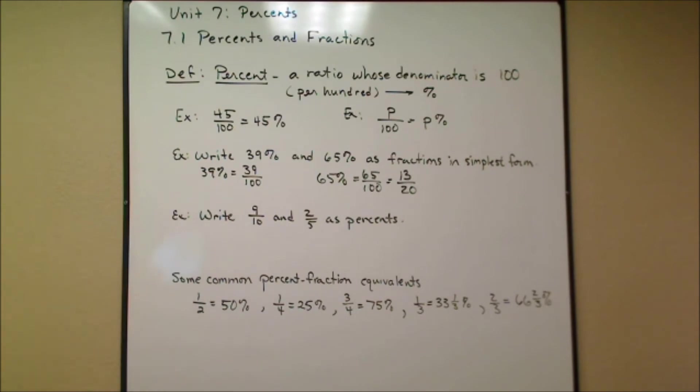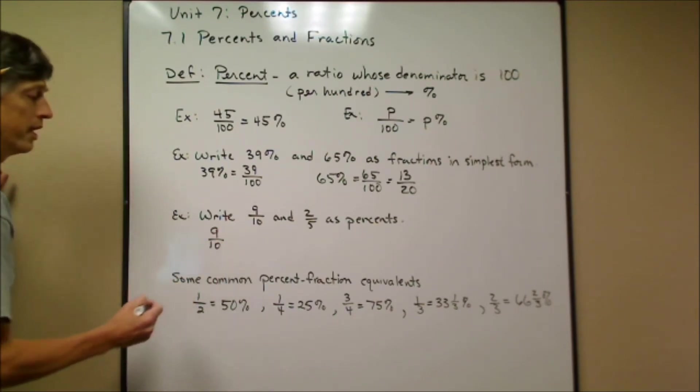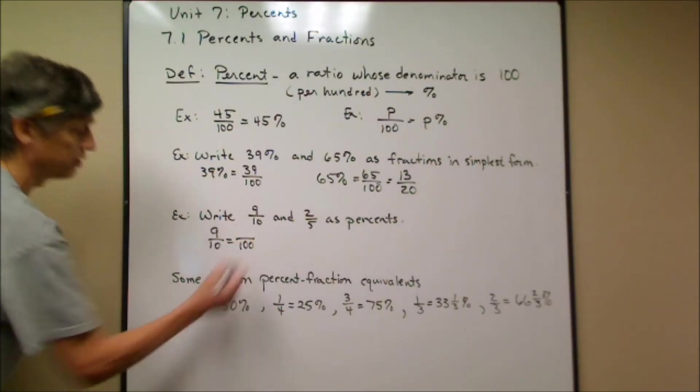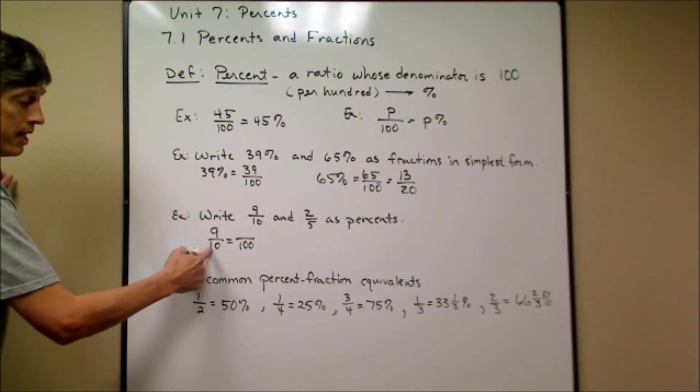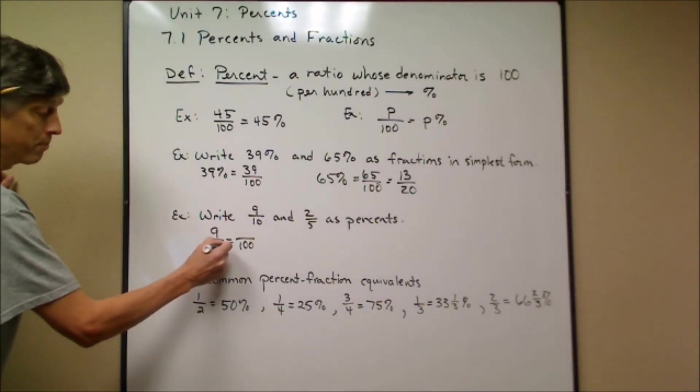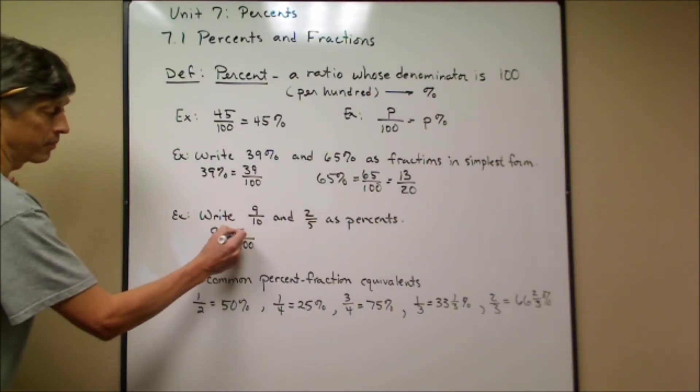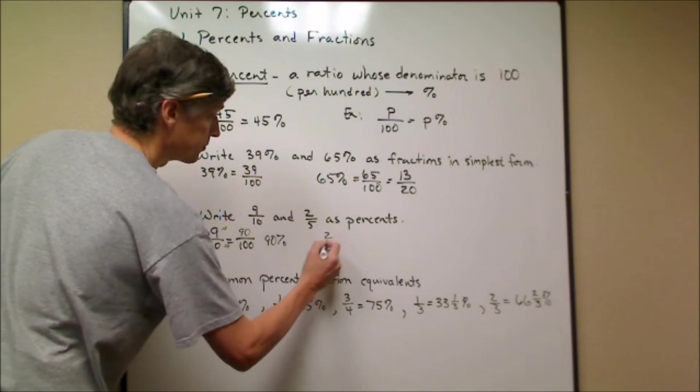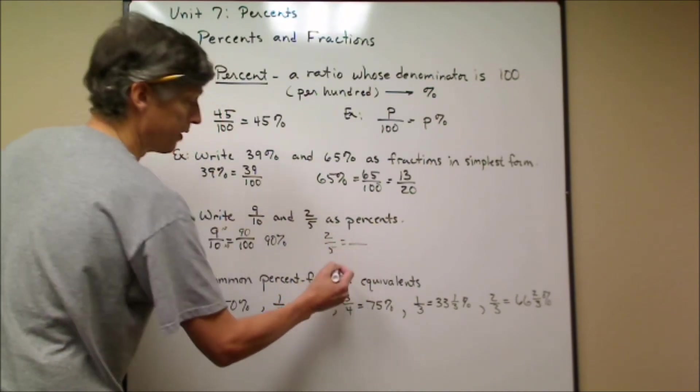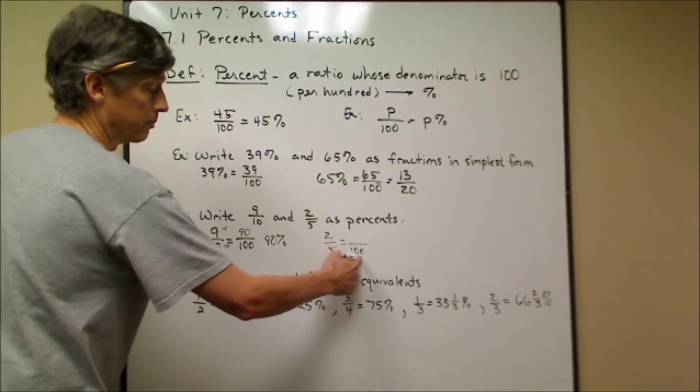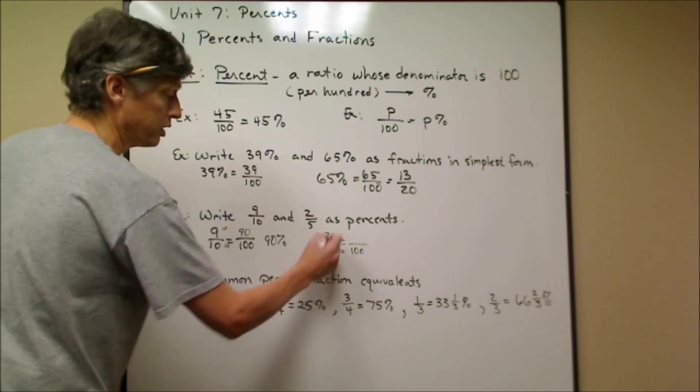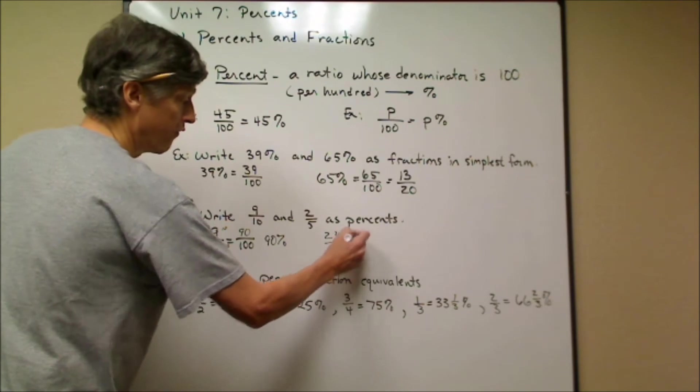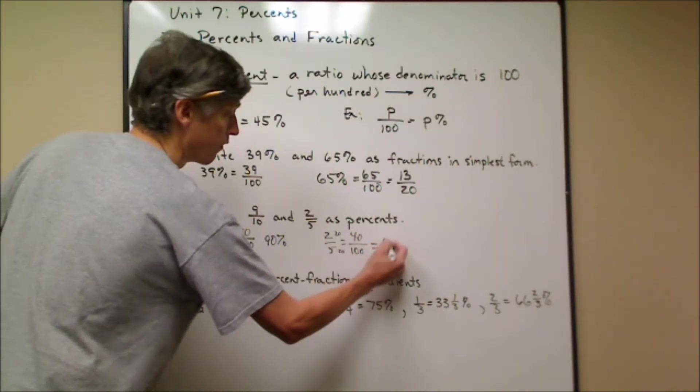Now let's take a couple of fractions and change these fractions into percents. Let's start with 9 over 10. We want to know how many is this out of 100. To multiply this 10 to make it 100, you'd have to multiply by 10. I would multiply the numerator by 10. I'm going to get 90, so this is 90%. And 2/5—I would multiply by 20. So I'll multiply the top by 20; that gives me 40. 40 out of 100, or 40%.